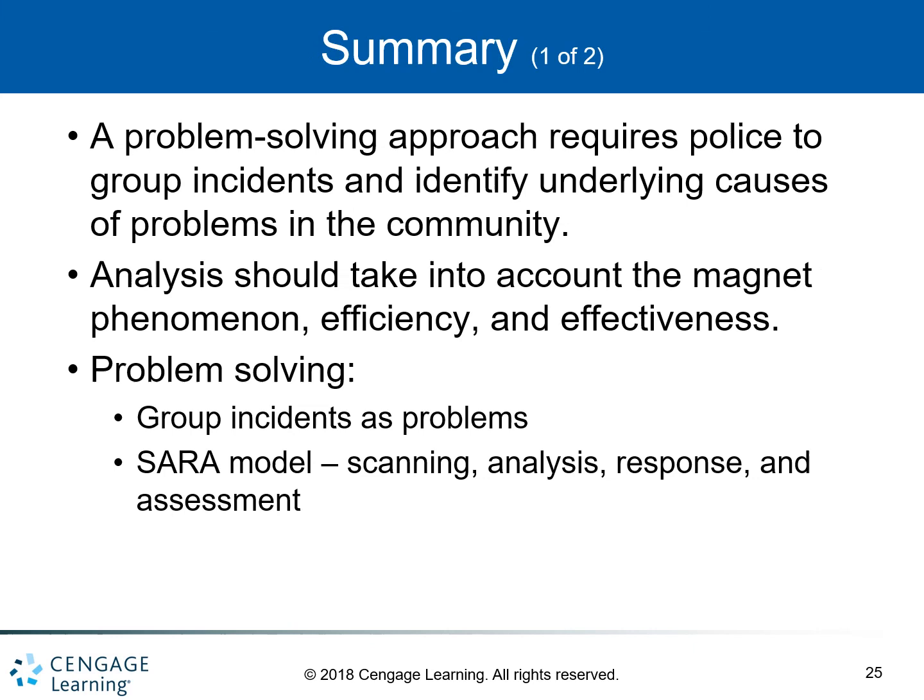Now let's summarize what we've gone over in this chapter. The first thing we looked at was a problem-solving approach that requires police to group incidents and identify underlying causes of problems in the community. We talked about analysis and how it should take into account the magnet phenomenon, efficiency and effectiveness. We also looked at problem-solving, group incidents as problems, and the SARA model — which is scanning, analysis, response, and assessment.